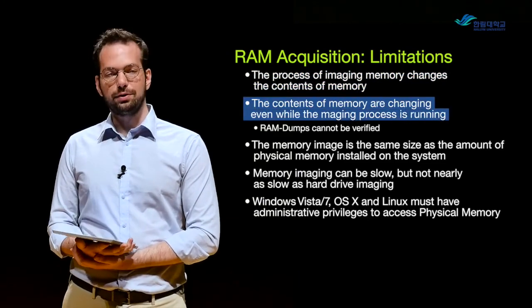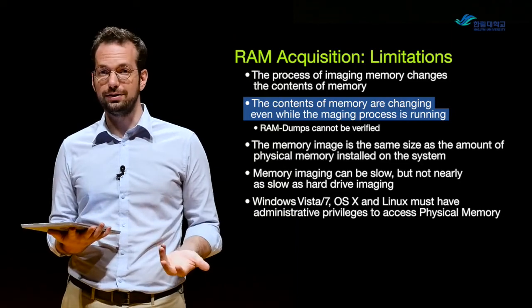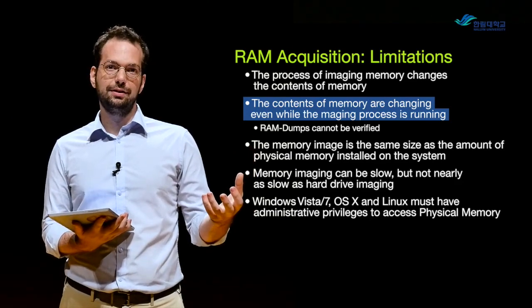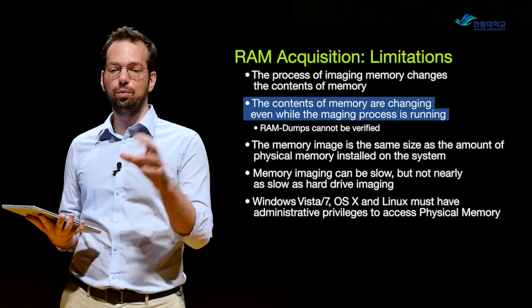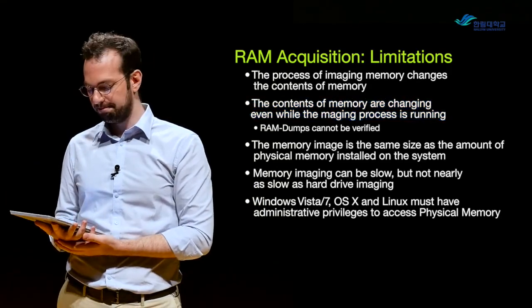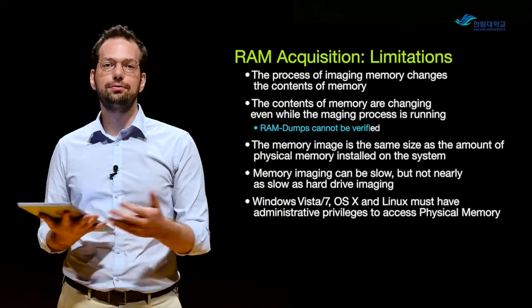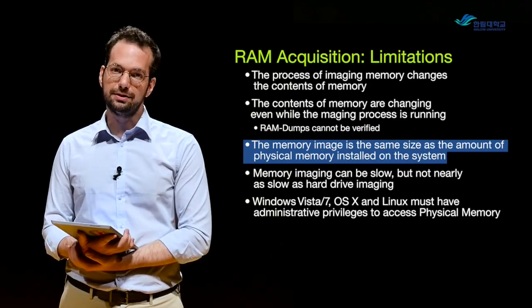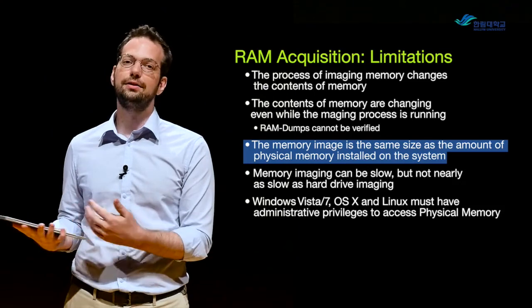The contents of memory are changing while the imaging process is running because we're running a program and the computer is still on, so the operating system is also changing RAM all the time. With a hard drive we would start by taking a hash of the original disk, but with RAM it's always changing so that first hash is completely worthless. We can only hash the image file once we've acquired it. RAM dumps cannot be verified in a very straightforward way — all of our verification comes from documentation. The memory image is the same size as the original amount of physical memory installed on the system.